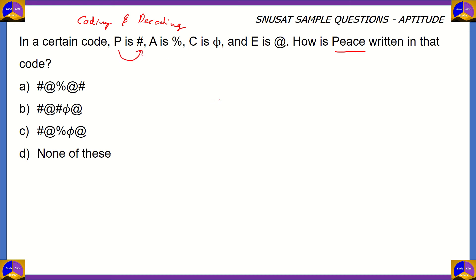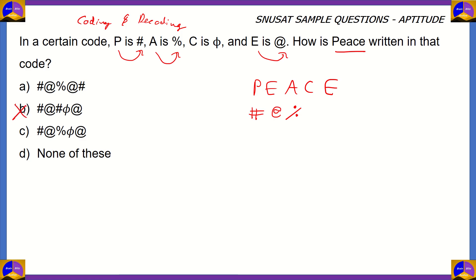So we know that P is hashtag. Let's write PEACE and make sure that we get the right code. P is hashtag, E is at — we'll put the at-the-rate symbol — and A is percentage. We've already eliminated option B because option B's third letter is a hashtag, which means that would translate to P, so it would read P-A-P-C-E, which is wrong.